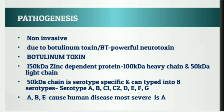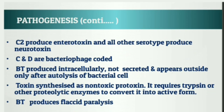Botulinum toxin, or BT, is a 150 kilodalton zinc-dependent protein consisting of a 100 kilodalton heavy chain and a 50 kilodalton light chain. This 50 kilodalton light chain is serotype specific and can be typed into eight serotypes: A, B, C1, C2, D, E, F, and G. Among these, serotypes A, B, and E cause human disease, with serotype A being the most severe.